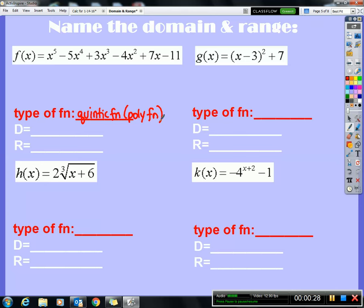On g of x, you see that it's also a polynomial function, but because it's x minus three squared, it's just a quadratic function. But more generally, it is part of the polynomial family of functions. Now h of x is a simple cube root function that I've done some transformations on. K of x is exponential because the variable is in the exponent. I've done some transformations on it, but the basic family of functions is exponential.